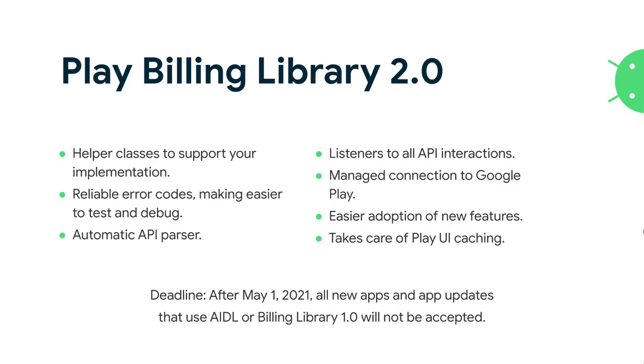Here is the news. After May 1, 2021, all new apps and updates that use AIDL or Play Billing Library 1 will not be accepted. You have around 18 months to start doing the migration. We are taking this decision to offer a better solution. From version 1 to version 2 we did a full refactor — the library is now made in Kotlin, making it much more Kotlin-friendly if you're using Kotlin in your app.